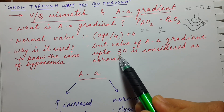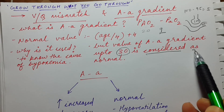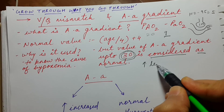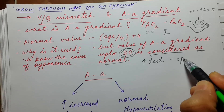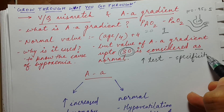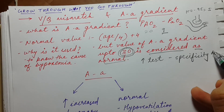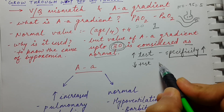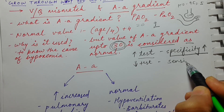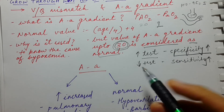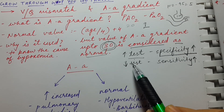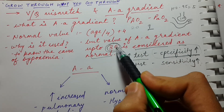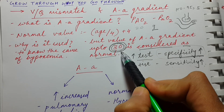The value of AA gradient up to 30 is considered as normal. Why is the value kept high? Whenever you increase the value of any test, the specificity of the test increases — this is a rule from biostatistics. Whenever you decrease the value of any test, the sensitivity increases. That's why, to increase the specificity of the AA gradient, the value is kept higher. So the value up to 30 is considered as normal.